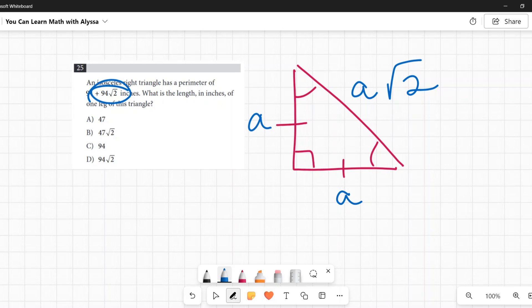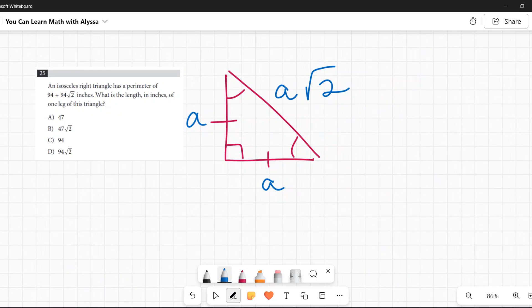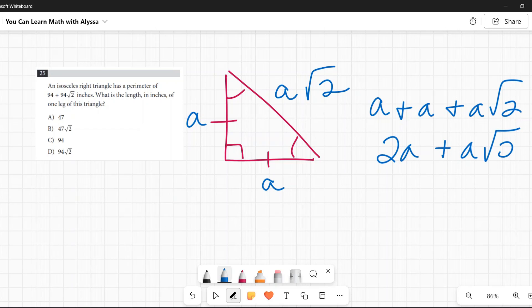If this 94 square root of two is representing this - just a little side note here - my perimeter would be these two added together and then we'd add that one. So we would have a plus a and then that a times the square root of two. So we would have 2a plus a times the square root of two. We have two things being added together and they're always going to be separate.